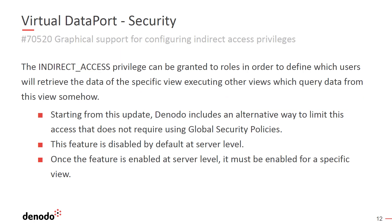Following this update, Denodo includes a new indirect access privilege that can be granted to roles on specific views to limit access under any subscription bundle. We can enable this feature at the server level by navigating to Administration, Server Configuration, and checking the option Allow Indirect Access by Default in the Privileges tab. Once the feature is enabled at the server level, it can be enabled for a specific view. The roles that include these privileges can be configured for a specific view or procedure by clicking the Privileges tab in the Detail pane of the view or procedure and enabling the option Restrict Indirect Access.